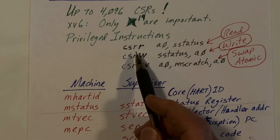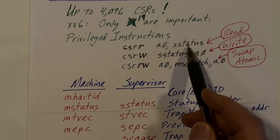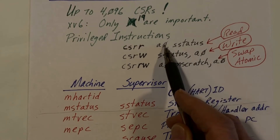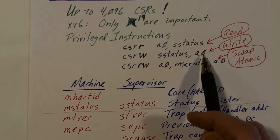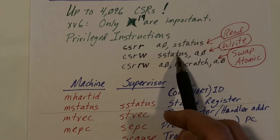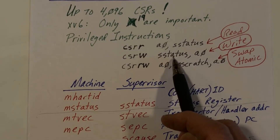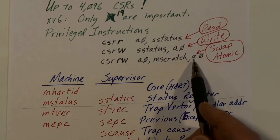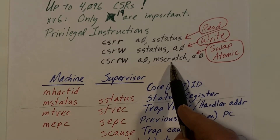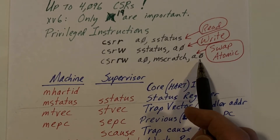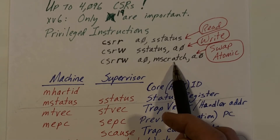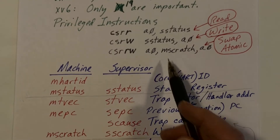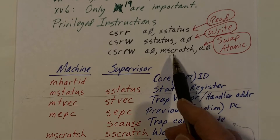There are three important privileged instructions for CSRs. First, a read instruction — for example, this takes the value in the S-status CSR and moves it into the A0 register. Second, a write instruction — takes the value in some register and moves it into a CSR, here writing into the S-status register. Third, a swap instruction — this simultaneously copies from MScratch into A0 and copies A0 into the CSR. This is done atomically, meaning both copies happen simultaneously without any interleaving of other instructions.